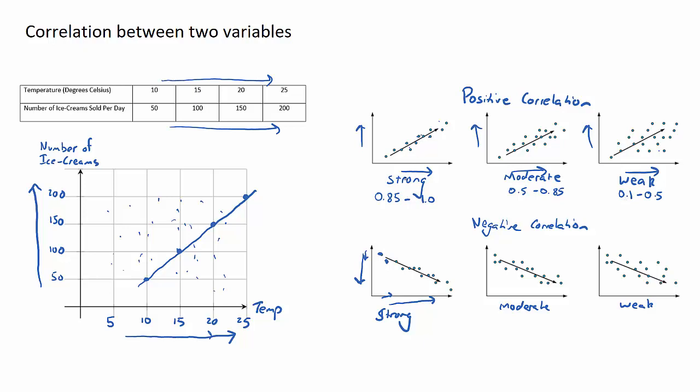For example, if we got an r value of 0.86, that would look kind of in the middle of strong and moderate correlation, but because it's higher than 0.85, I would call it strong positive correlation. The same values apply for negative correlation: 0.85 to 1, 0.5 to 0.85, and 0.1 to 0.5.